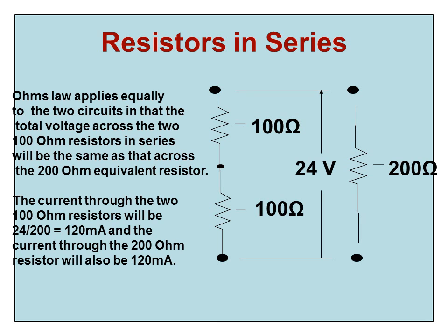Ohm's law applies equally to the two circuits in that the total voltage across the two 100 ohm resistors in series will be the same as that across the 200 ohm equivalent resistor.